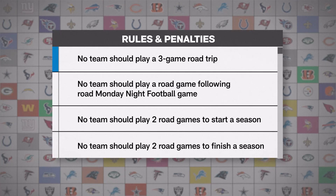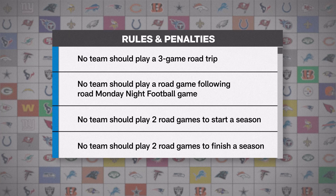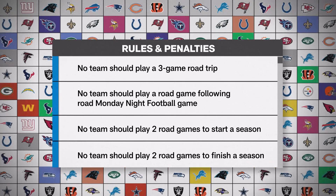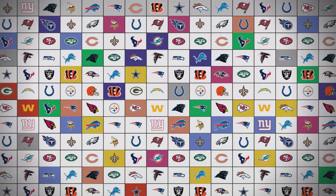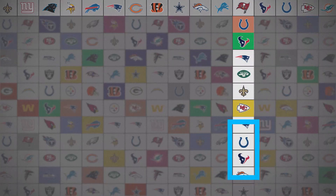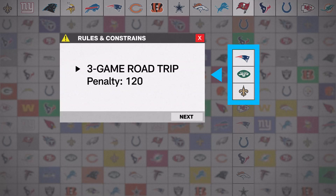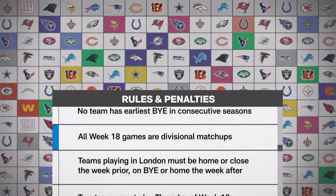The way we do that is with a negative-based scoring system where we put a penalty on all the things we don't want to see — both team-wise and television-wise. For instance: three-game road trips, road after road Mondays, early byes, two away to start, two away to finish — all the things coaches and general managers don't like. If I had a three-game road trip last year, the penalty for having one again this year should be significantly higher than for someone who hasn't had one since 2003.